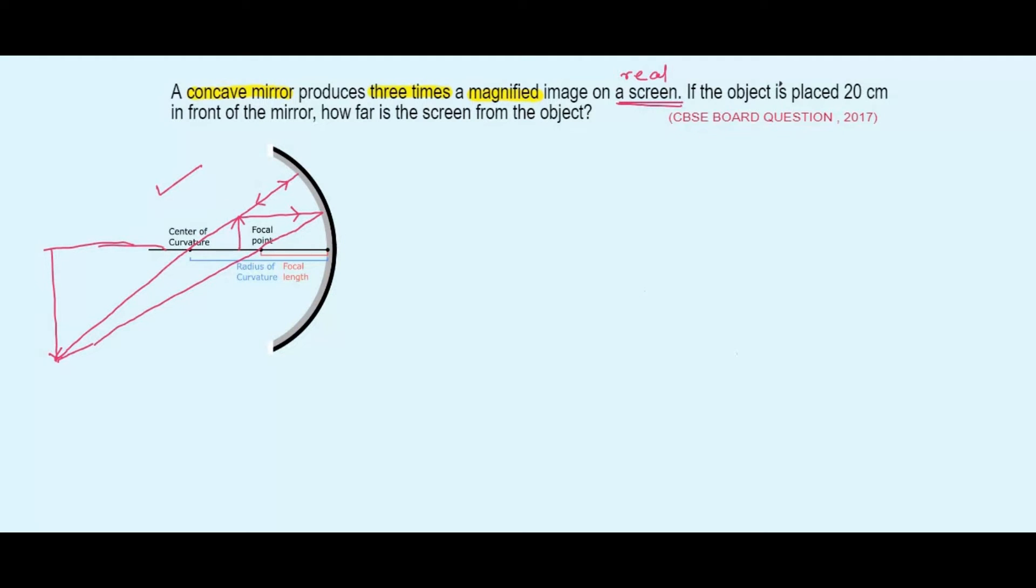So let's proceed. Here we have the magnification as three times and it's a real image. So how do we write the magnification for that? Magnification will be minus three. The minus sign indicates that it's a real image and the number three notes how many times the image is magnified. We have to write minus because this is a real image.